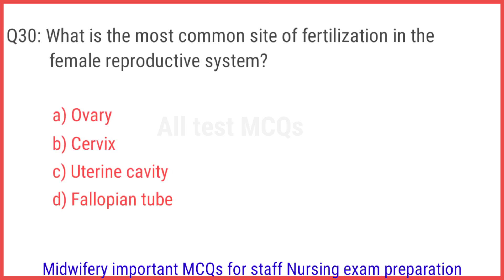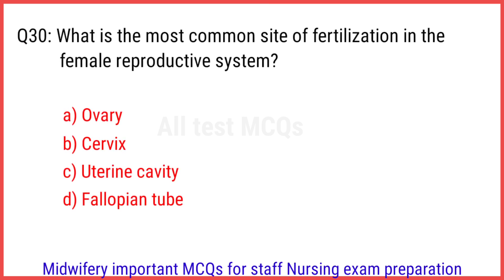Q30. What is the most common site of fertilization in the female reproductive system? The right answer is option D: Fallopian tube.